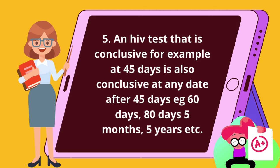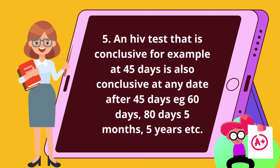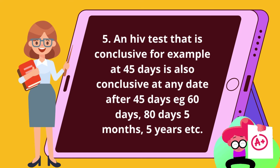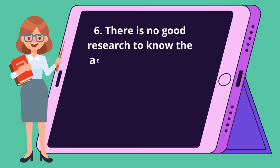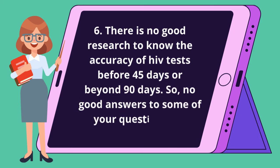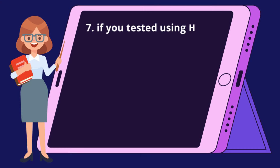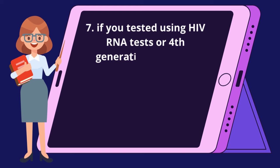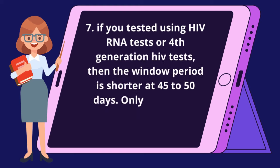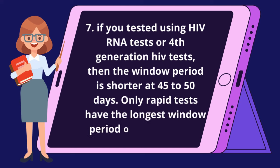5. An HIV test that is conclusive — for example at 45 days — is also conclusive at any date after 45 days, e.g., 60 days, 80 days, 5 months, 5 years, etc. 6. There is no good research to know the accuracy of HIV tests before 45 days or beyond 90 days, so no good answers to some of your questions are available. 7. If you tested using HIV RNA tests or 4th generation HIV tests, the window period is shorter at 45 to 50 days. Only rapid tests have the longest window period of up to 90 days.